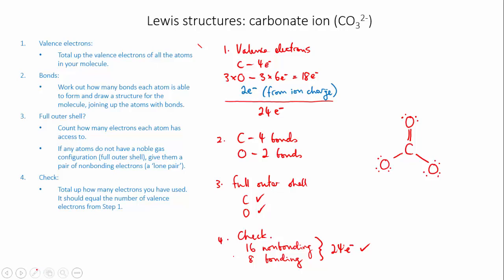As drawn, the Lewis structure looks like a neutral molecule. We need to indicate it's an ion, so we put the entire structure in square brackets and write the charge on the outside — 2 minus — to show that it is in fact an ion.